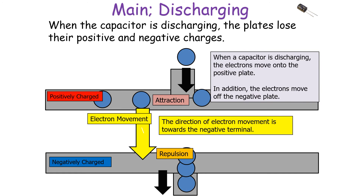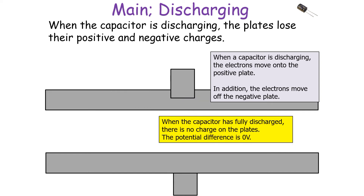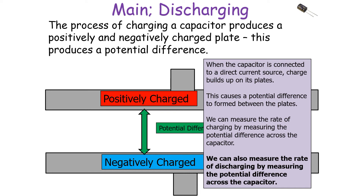As the capacitor discharges, the electrons move onto the positive plate and off the negative plate. The direction of electron movement is towards the negative terminal — from the positive terminal onto the positively charged plate, and from the negatively charged plate towards the negative terminal. This is the opposite direction to electron movement compared to when the capacitor is charging. When the capacitor is fully discharged there's no further charge on the plates, no attraction between the two plates, and the potential difference is zero. We can measure this rate of discharge by measuring the potential difference across the capacitor.